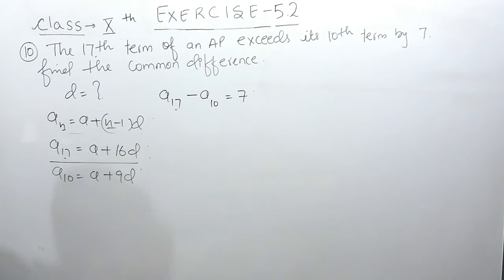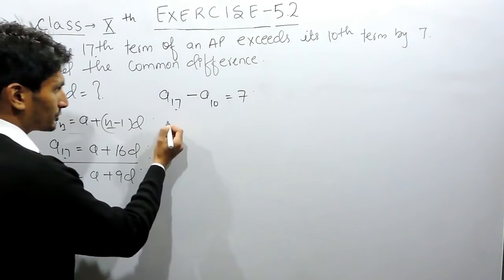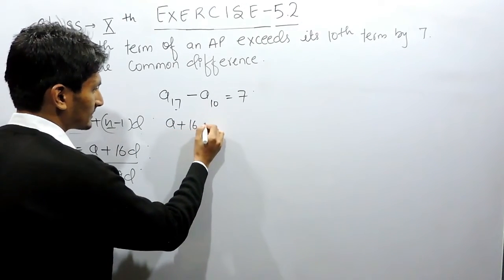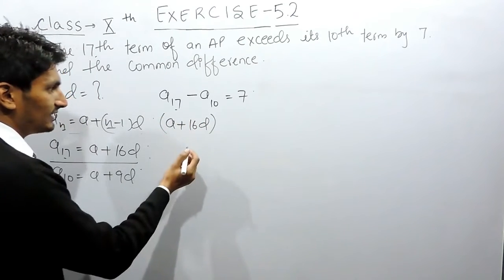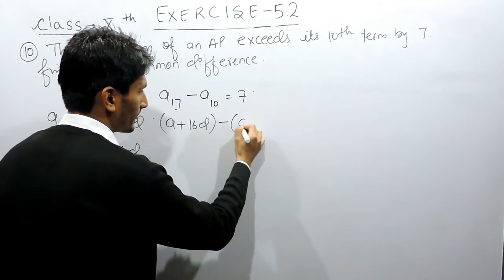I can substitute the values here. A plus 16D is the 17th term, minus A plus 9D, so this equals 7.